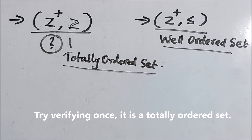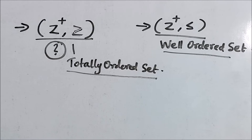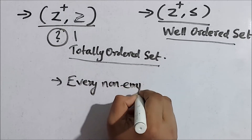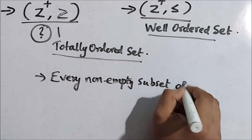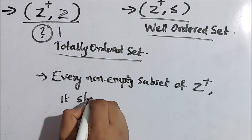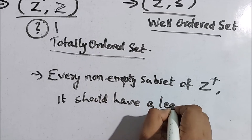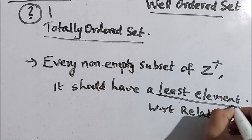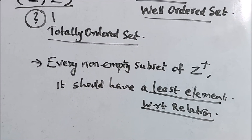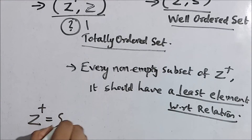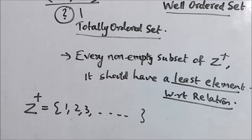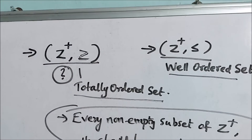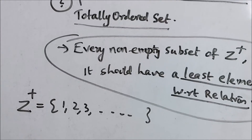But the question is whether it satisfies the second property to become a well-ordered set. The second property requires that every non-empty subset of ℤ⁺ has a least element with respect to the relation. When we say least element, it is with respect to the relation — here, the relation is greater than or equal to. We are trying to prove that this is not the case by providing a counter-example.